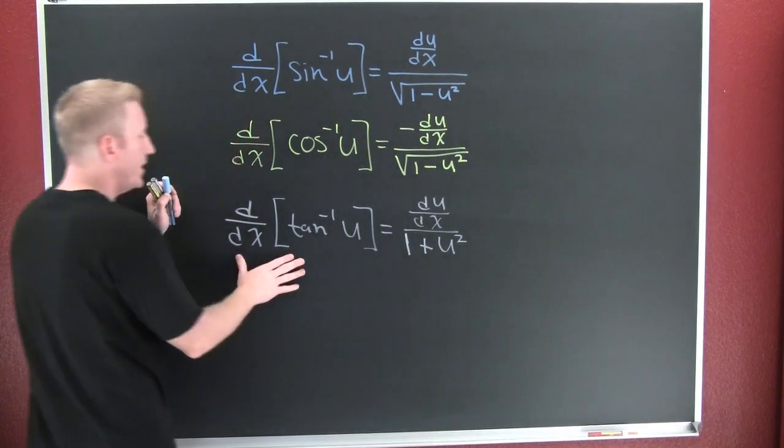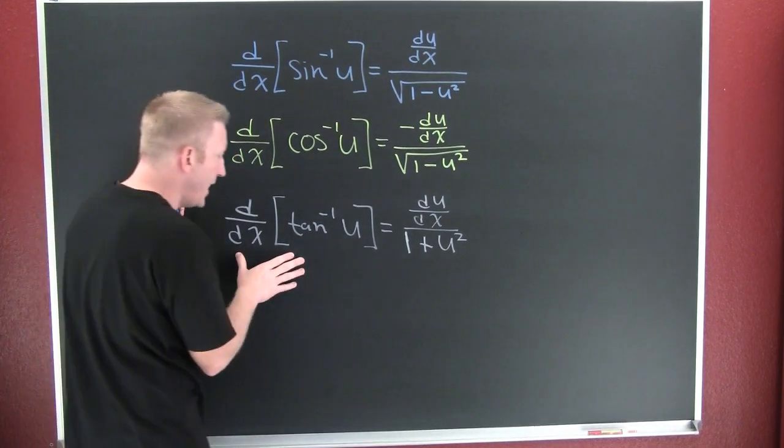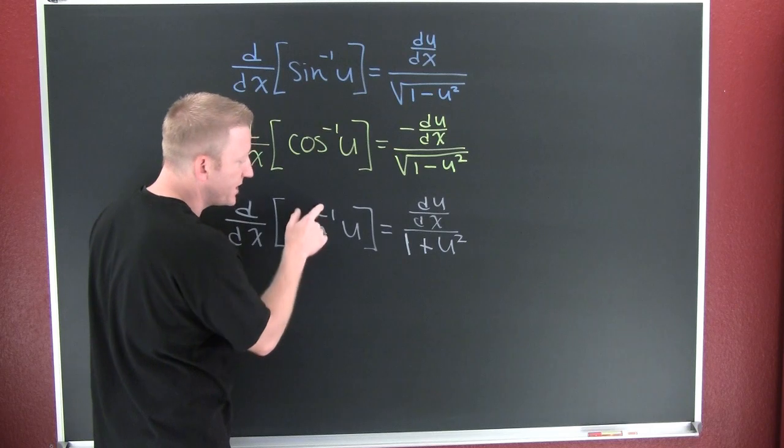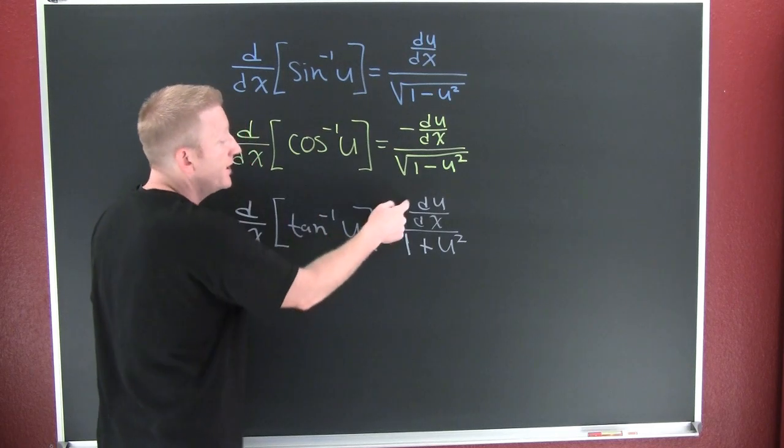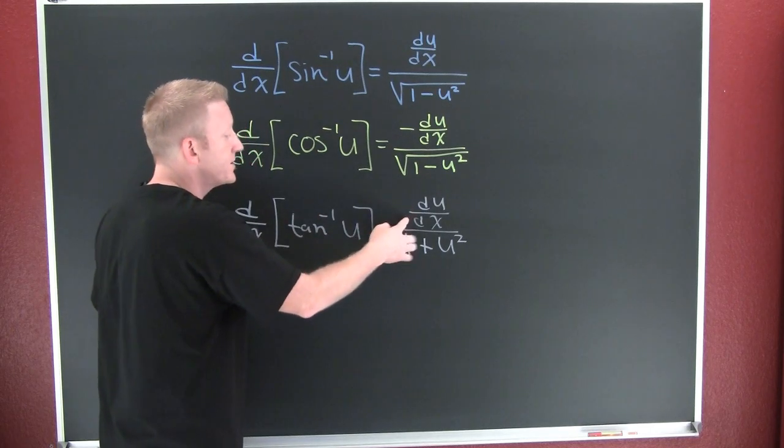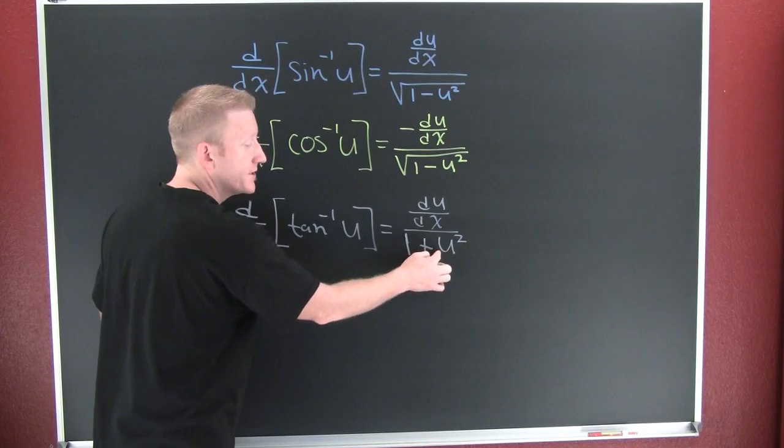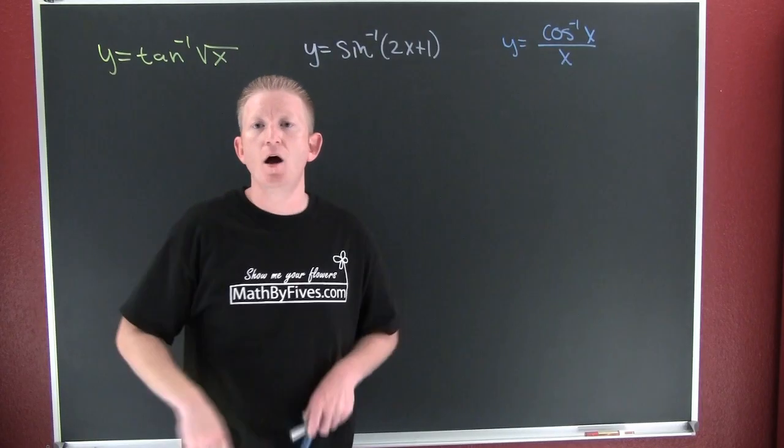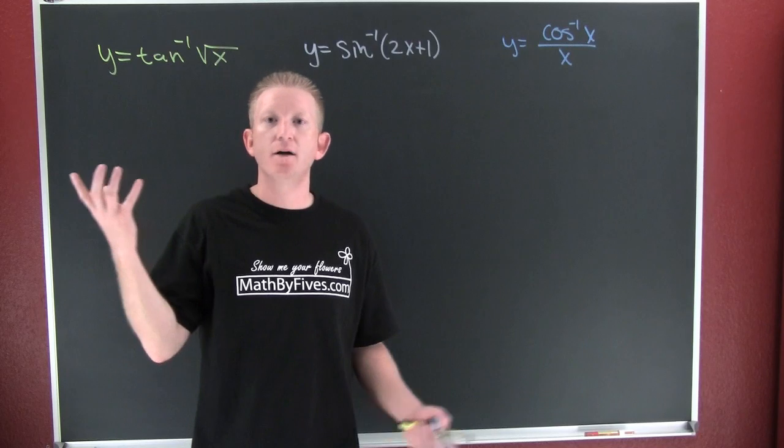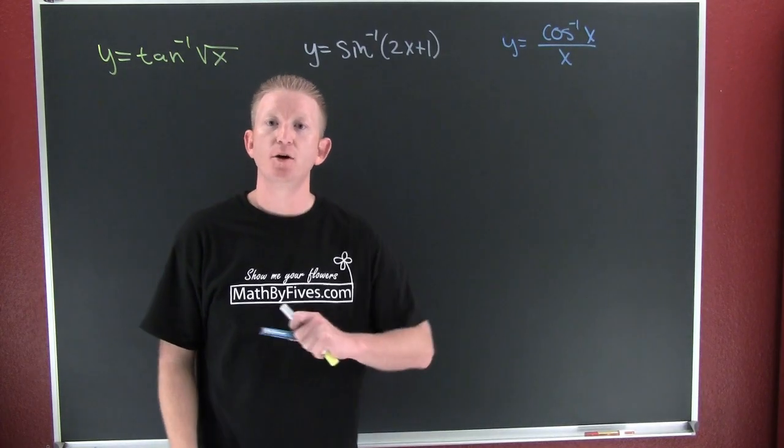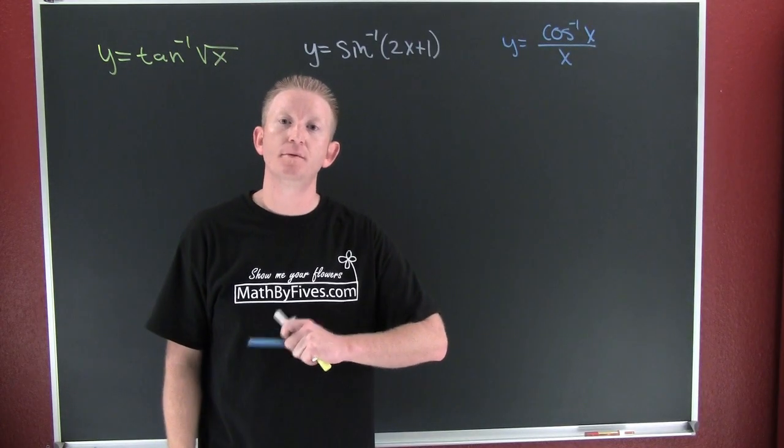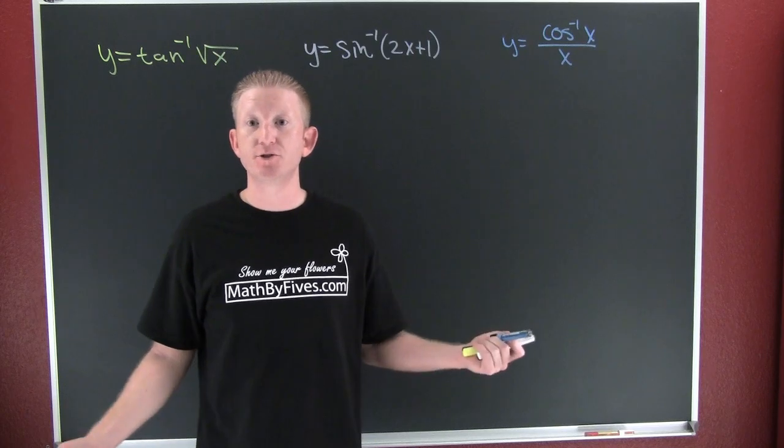Okay, ready, I'm ready. The derivative of the inverse tangent of u is du/dx divided by one plus u squared. Okay, right, all right, fine. What do we have here? We got derivatives of the inverse trigonometric functions. Yes, go into some examples.